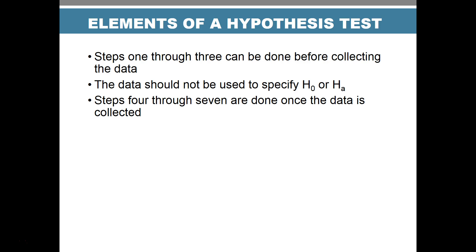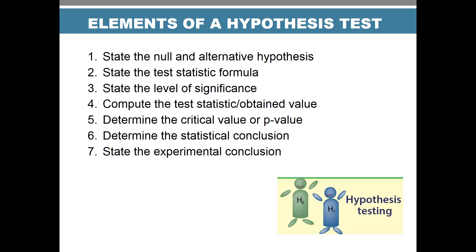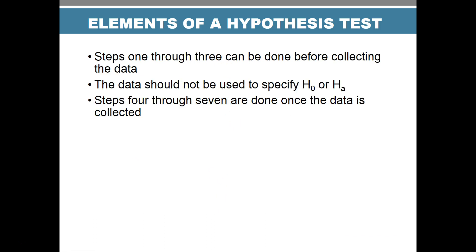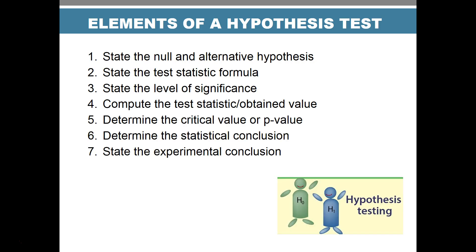Steps one through three should be done before we collect our data — state the hypotheses, choose the test, and set the significance level. We should not use our data to specify the null hypothesis; we develop a hypothesis first and then test the data. Steps four through seven are done once data is collected — plug in results, find the critical value or p-value, and make our statistical and experimental conclusions.